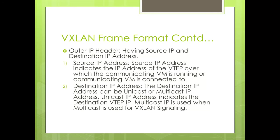The outer IP header includes a source IP address and a destination IP address. The source IP address indicates the IP address of the VTEP over which the communicating VM is running or connected to. The destination IP address can be a unicast or multicast IP address — unicast indicates the destination VTEP IP, while multicast is used when multicast routing is used for VXLAN signaling.